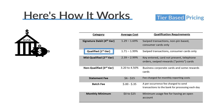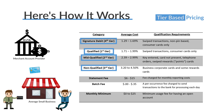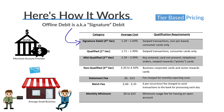When tier pricing was introduced, there were three tiers: qualified, mid-qualified, and non-qualified. A fourth tier was later added — four-tiered pricing — with the introduction of offline debit purchases. Offline debit is when a consumer uses a debit card but doesn't enter their PIN at the point of sale.